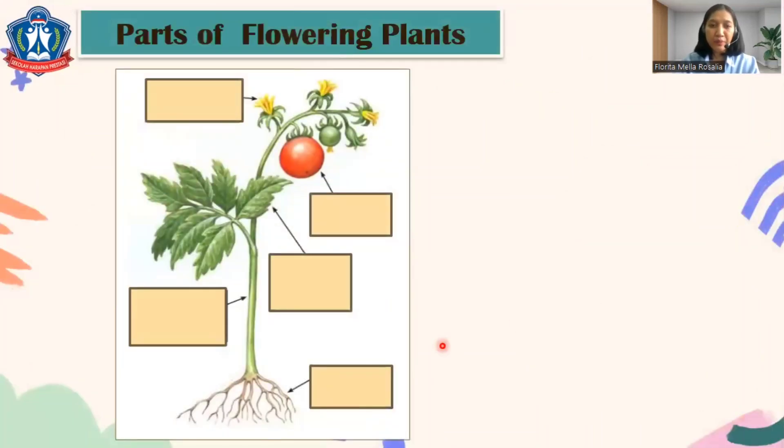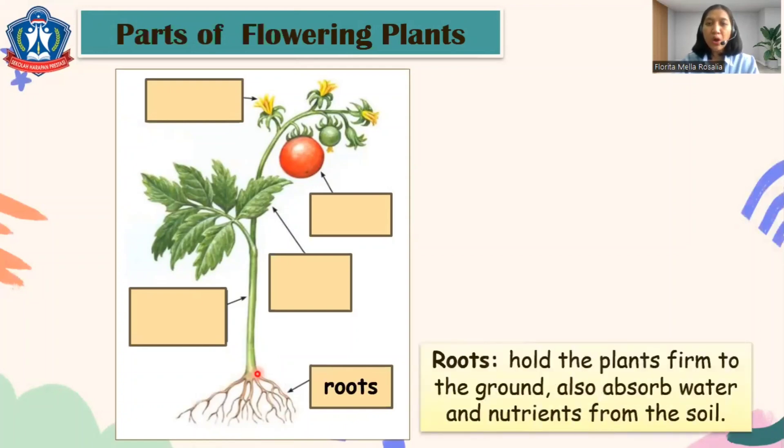Let's see the parts of the flowering plants. The first one — these are roots. The roots hold the plants firm to the ground and also absorb water and minerals from the soil.